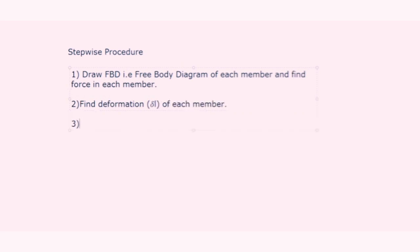Before solving an example, let's see the stepwise procedure. The first step is to draw the FBD — that is, the free body diagram — of each member and find the force in each member. The second step is to find the deformation of each member, denoted by delta L. The third step is to find the total deformation by adding all the deformations algebraically.